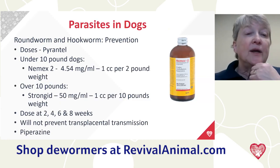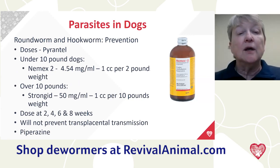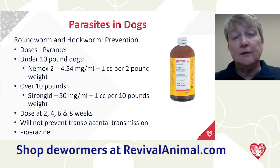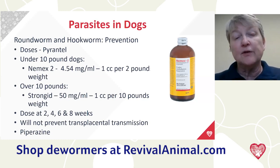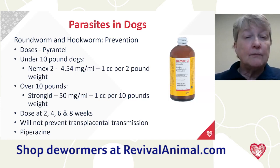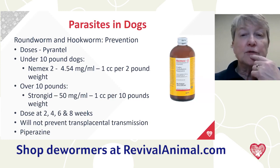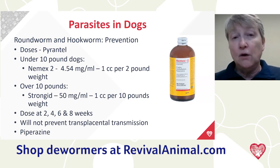For roundworm and hookworm prevention, use pyrantel pamoate. For dogs under 10 pounds I use Nemex at 1 cc per 2 pounds of body weight. Strongid is 10 times more concentrated — I dose it at 1 cc per 20 pounds, though either 1 per 10 or 1 per 20 pounds is safe. These can be dosed at weeks 2, 4, 6, and 8, but you can start as early as one week of age if you have a significant roundworm or hookworm problem, and you can deworm weekly. It will not prevent transplacental transmission.